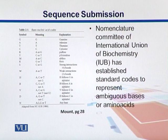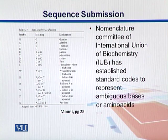H follows G in the alphabet, so it represents everything except G — it can be A, C, or T. A similar procedure is followed for B, V, and D. N can be any nucleotide.